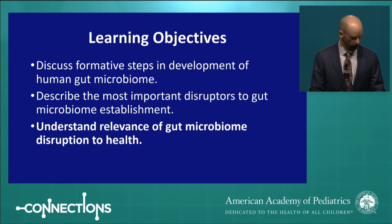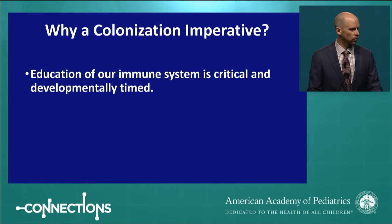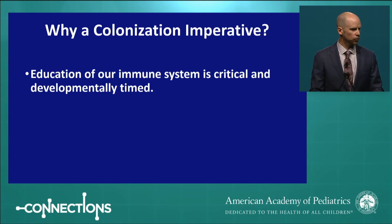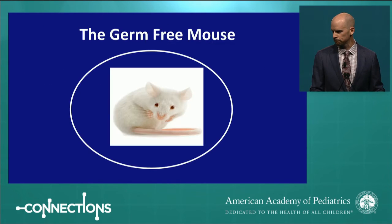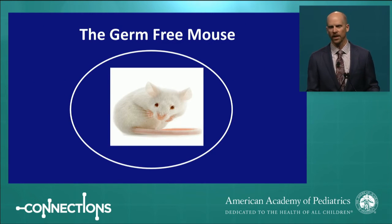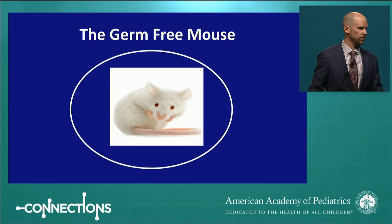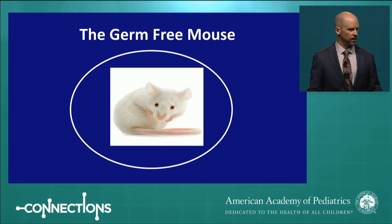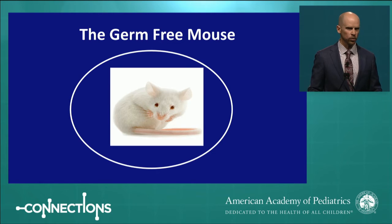What is the relevance of microbiome disruption to human health? First, there is a colonization imperative because education of our immune system is critical and developmentally timed. Much of our understanding comes from experiments involving germ-free mice — raised in sterile environments — which have a very abnormal immune system phenotype and are very susceptible to inflammatory and allergic diseases as adults.